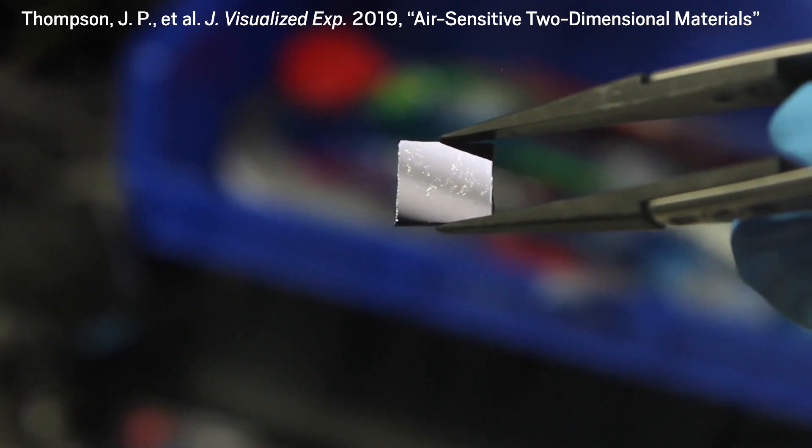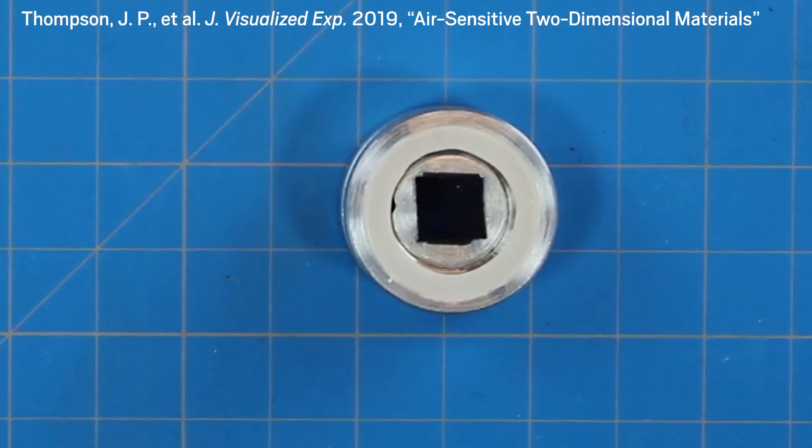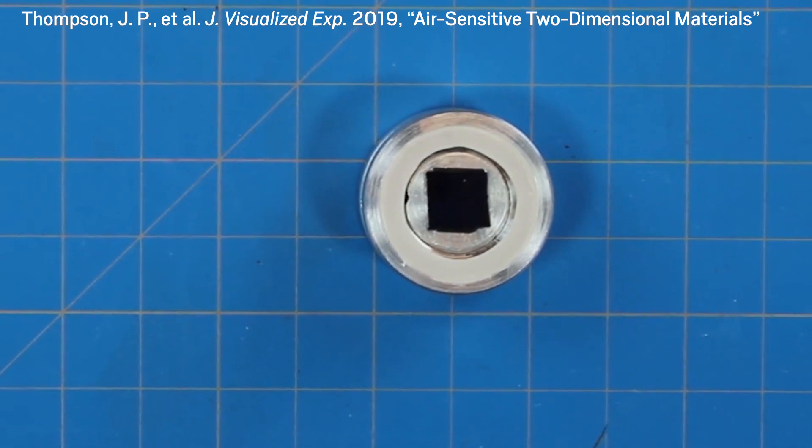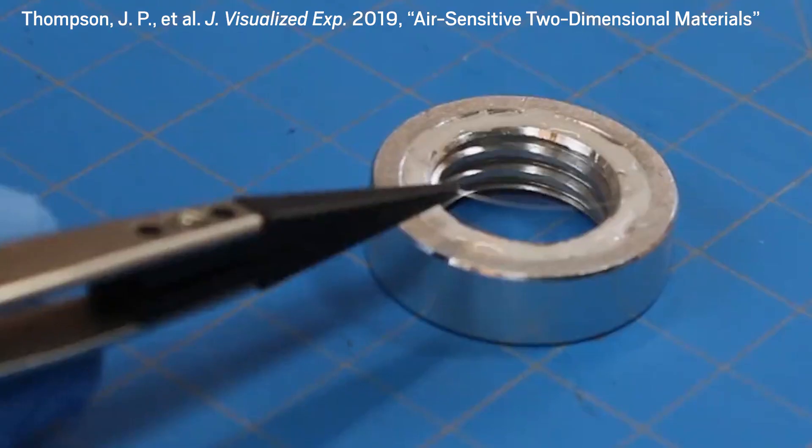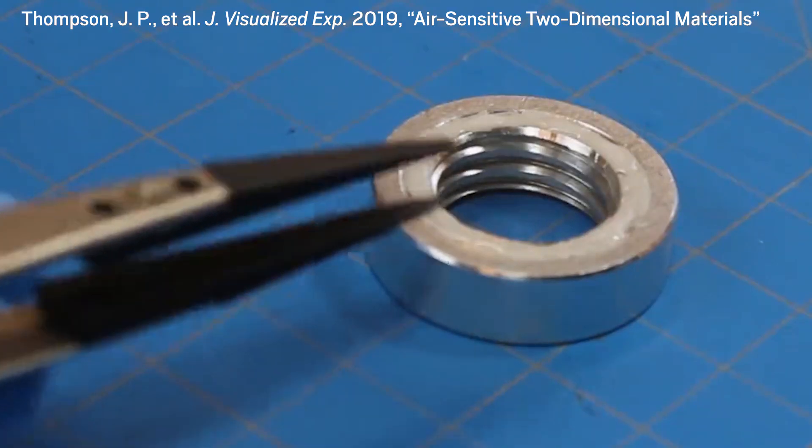Now that the Arkansas researchers have their large flakes of black phosphorus, they can add them to the airtight cell they designed. The aluminum cell has a glass window through which researchers can image the sample.